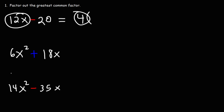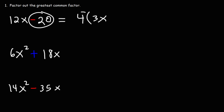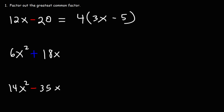12x divided by 4 is 3x. Negative 20 divided by 4 is negative 5. So this is our answer — the GCF that we factored out was 4.